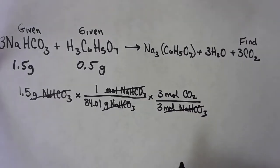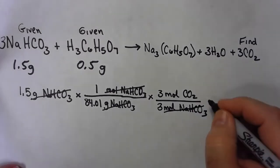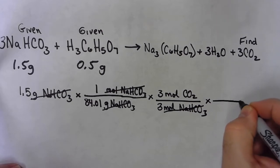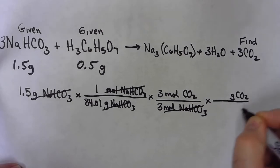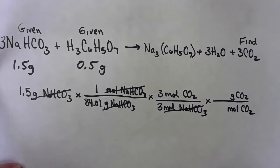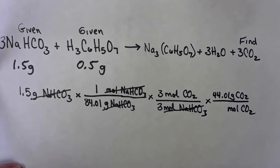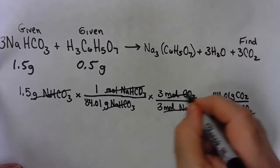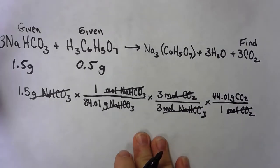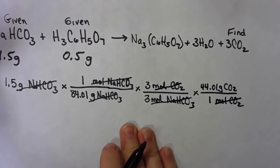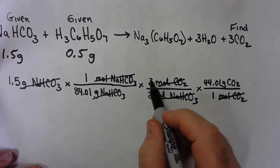But I don't want moles of CO2. I want grams of CO2. I'm going from mass to mass. So the next step is I need something that's going to tell me the number of grams of CO2 and a certain number of moles of CO2. And that number, once again, is the molar mass. So it just happens to be 44.01 grams of CO2 is one mole of CO2. So now my moles of CO2 are canceling.